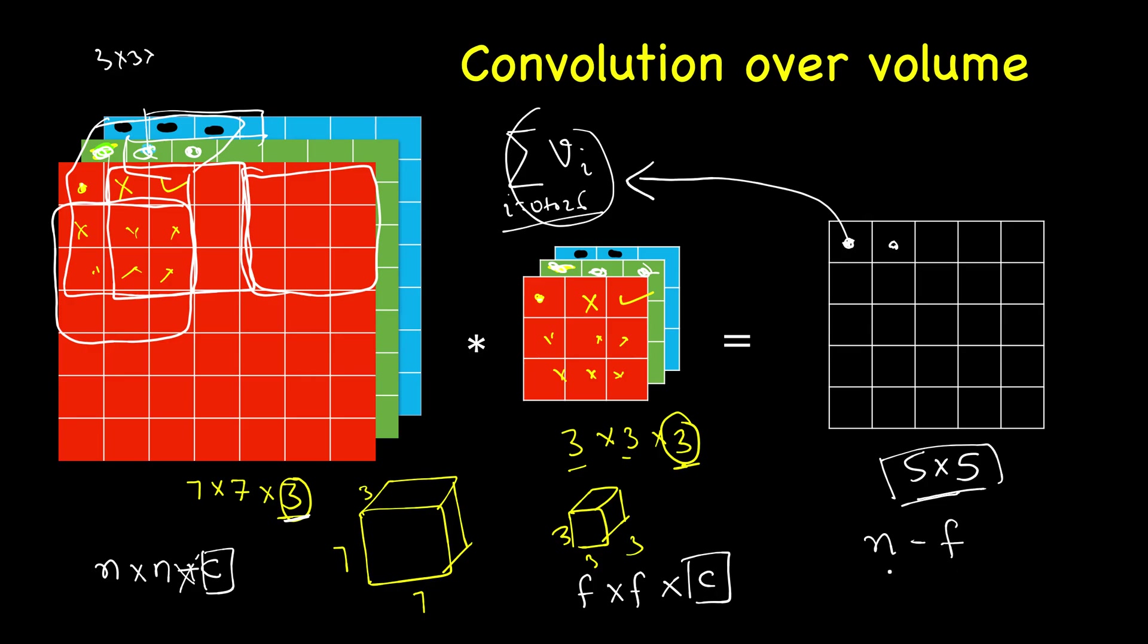Then the result will be (n-f+1)/s if we have stride, but in this case it's not, so the same formula will apply, cross the same thing depending on the second dimension, and channel is lost. So this is how we perform convolution over volume.